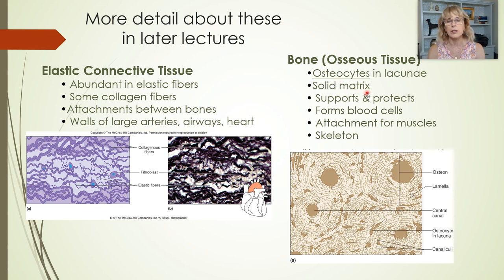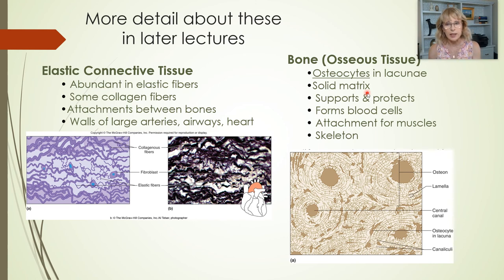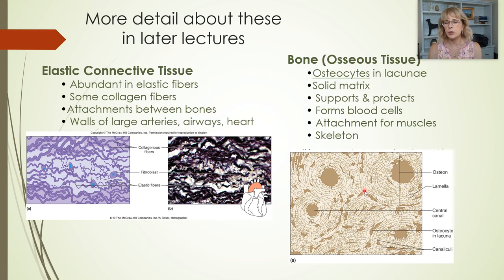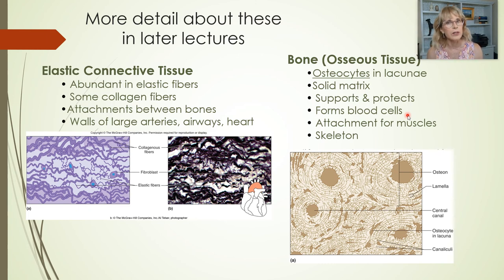Bone has a solid matrix. Connective tissue cells are very widely spaced apart with matrix between them. For many connective tissues that matrix is flexible, but in cartilage and in bone the matrix is solid. Bone tissue itself does not form blood cells, but there are spaces inside of bones where the tissue that makes blood cells lives, and we will talk about that more when we get to bones.